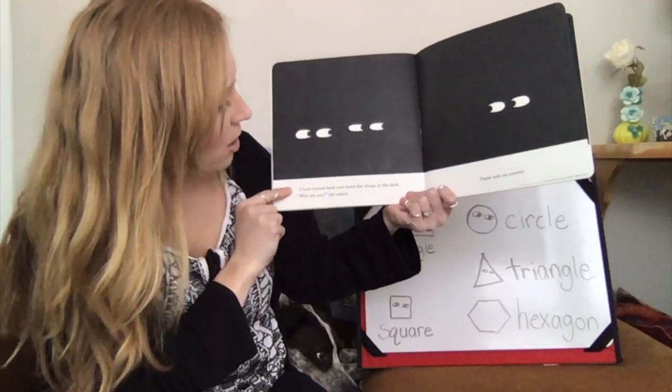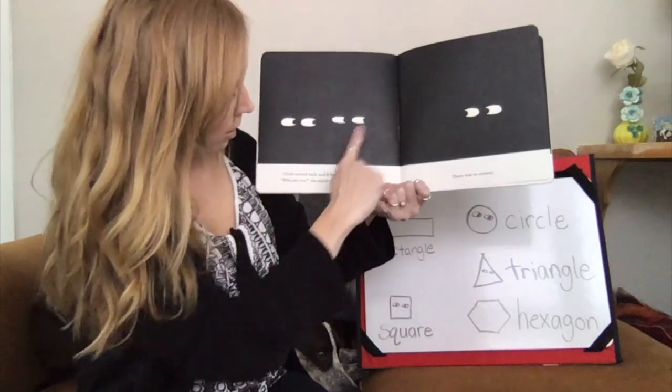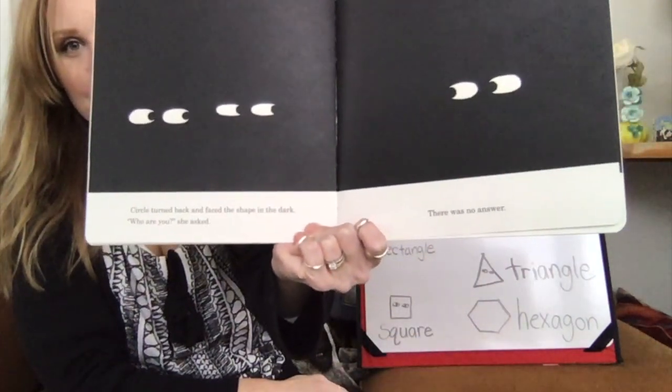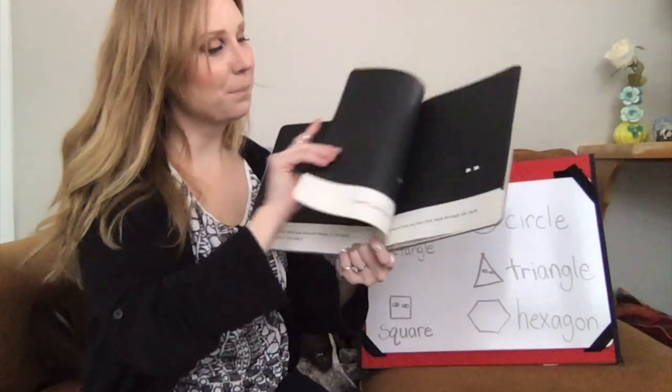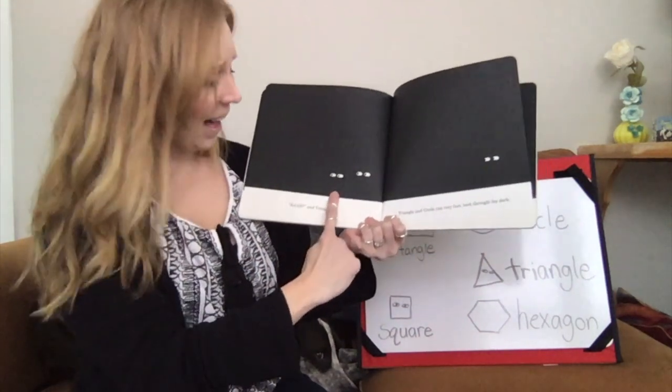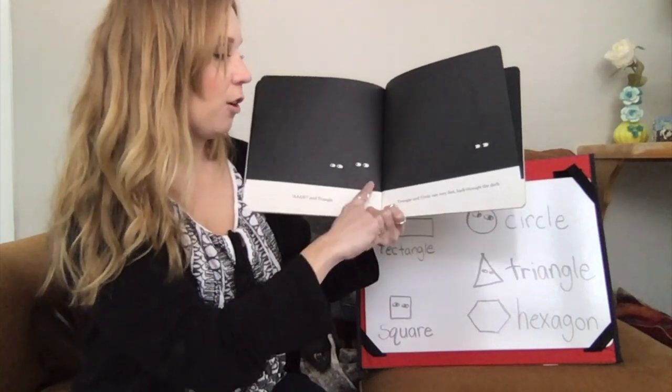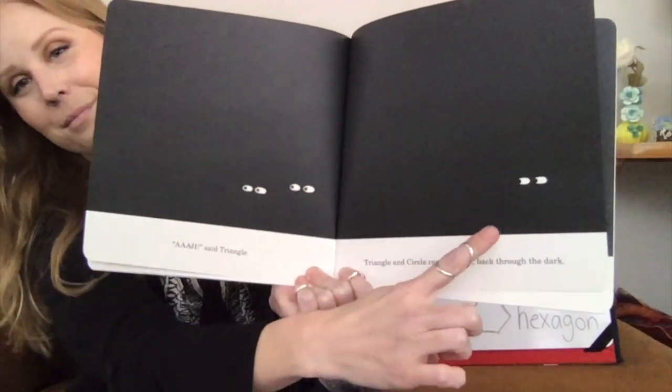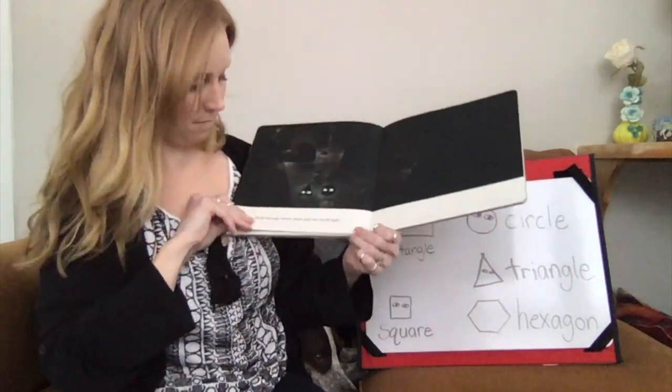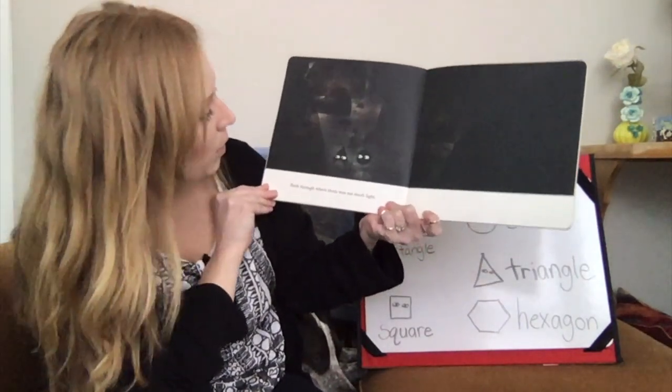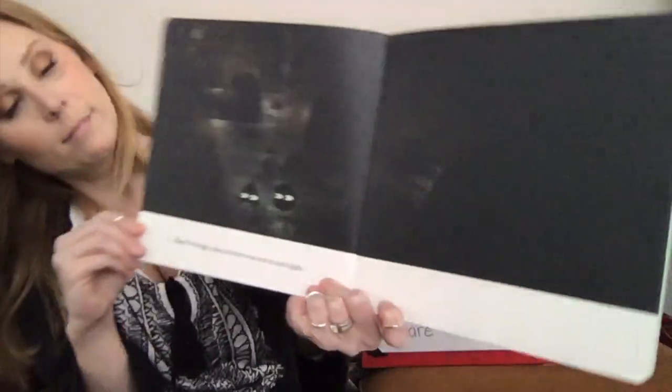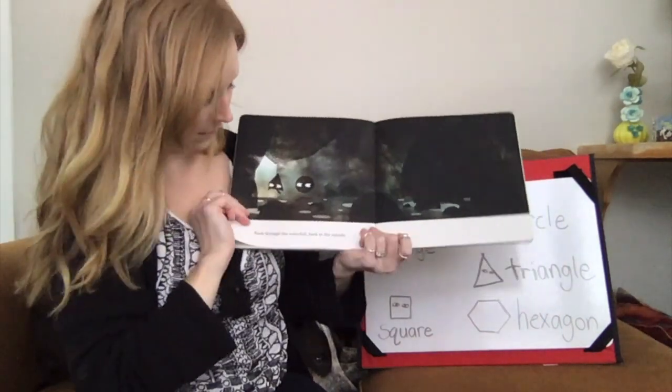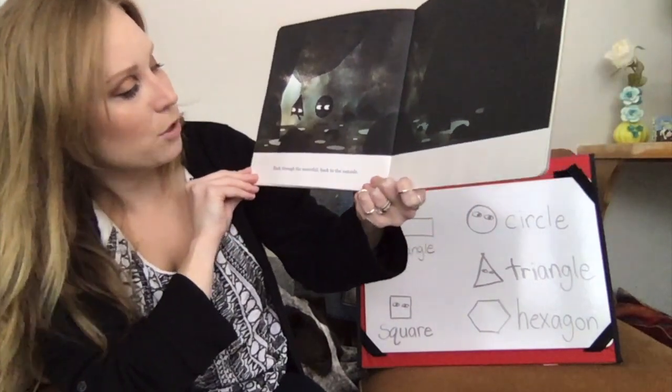Circle turned back and faced the shape in the dark. Who are you? She asked. There was no answer. Oh, said Triangle. Triangle and Circle ran very fast back through the dark. Back through where there was not much light. Back through the waterfall, back to the outside.